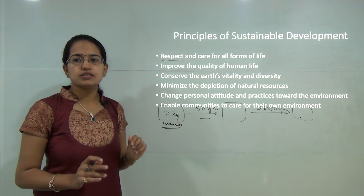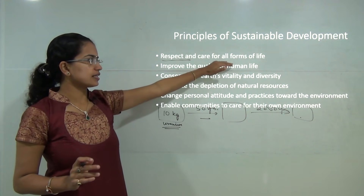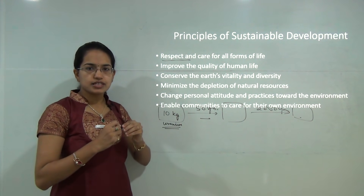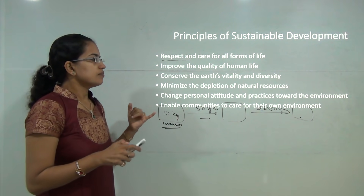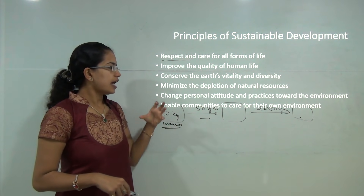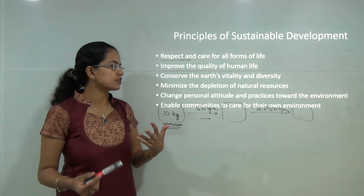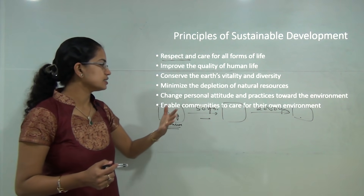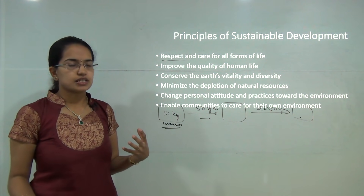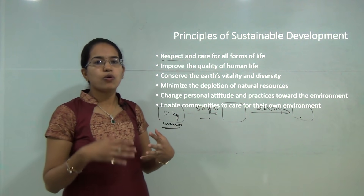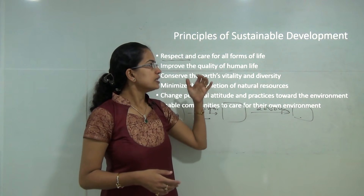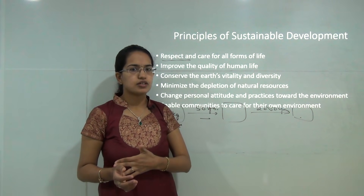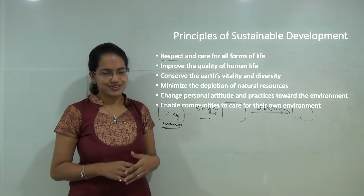The basic principles of sustainable development are: we must respect and care for all forms of life; the aim is to improve the quality of life with minimum interference or damage to existing resources; minimum depletion of the natural resources that exist; and changing our practices and way of using resources is an important method to preserve them for future generations. Communities should be enabled to have their own environment and develop their best use for natural and renewable resources. With this we cover the first chapter on resources.